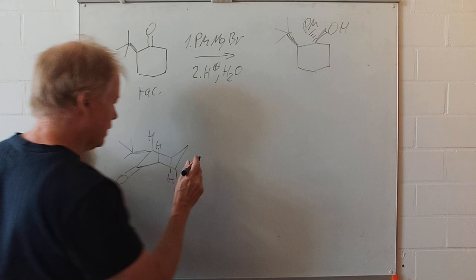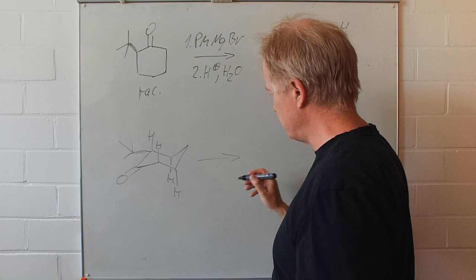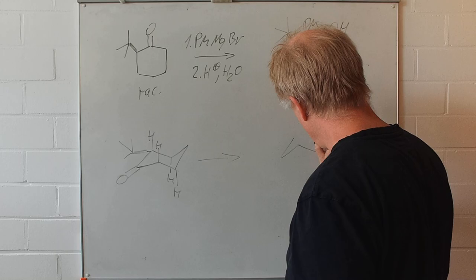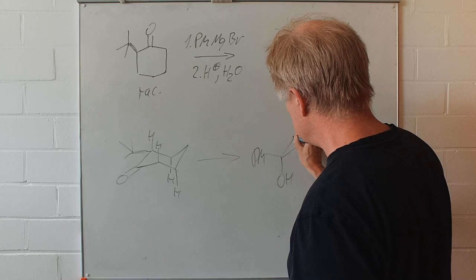So if now the phenyl group attacks from this side with the Bürgi-Dunitz angle what will be the result? The phenyl group in equatorial position, the tertiary butyl group also.